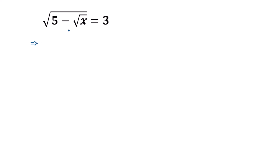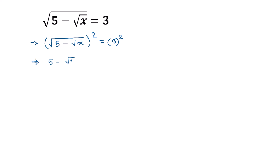Taking square on both sides, we can write square root of (5 minus square root of x), whole square, is equal to 3 squared. This square root and this square will cancel out, and it will be 5 minus square root of x is equal to 3 squared, which is 9.